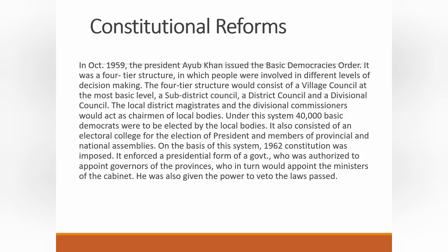Under this system, 40,000 basic democrats were to be elected by the local bodies; later the number of basic democrats increased to 80,000. It also consisted of an electoral college for the election of the president and members of the provincial and national assemblies. These elected people were allowed to vote for the president and members of the assemblies — only the electoral college was allowed to vote, not other political parties or individual persons.